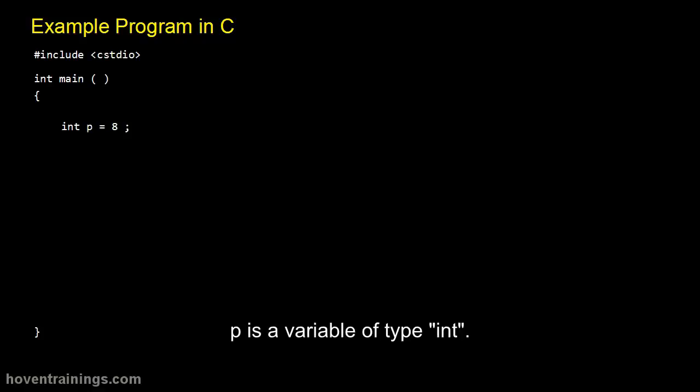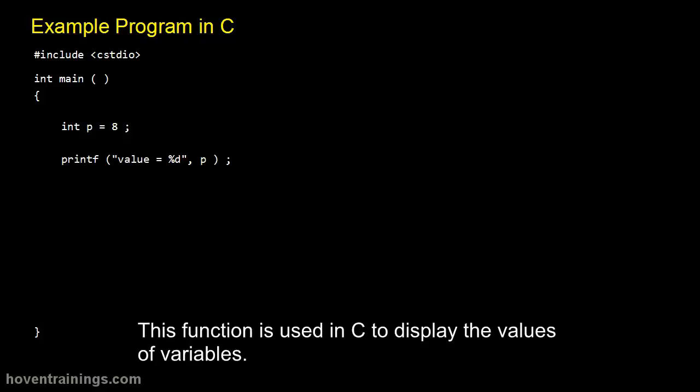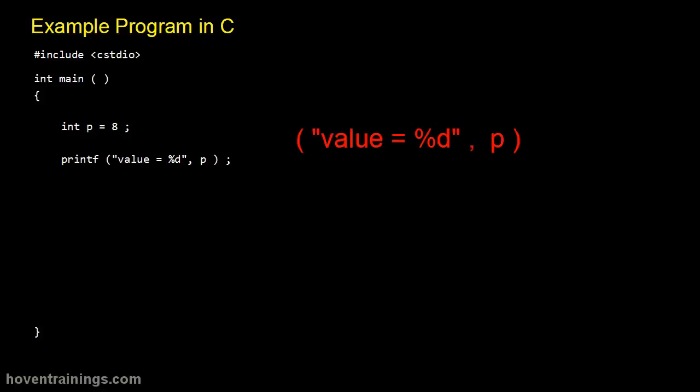P is a variable of type int. This is called the format string. It contains format specifiers.